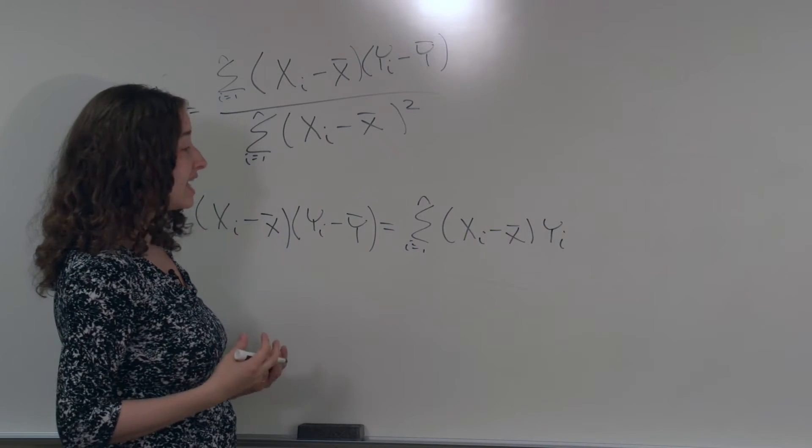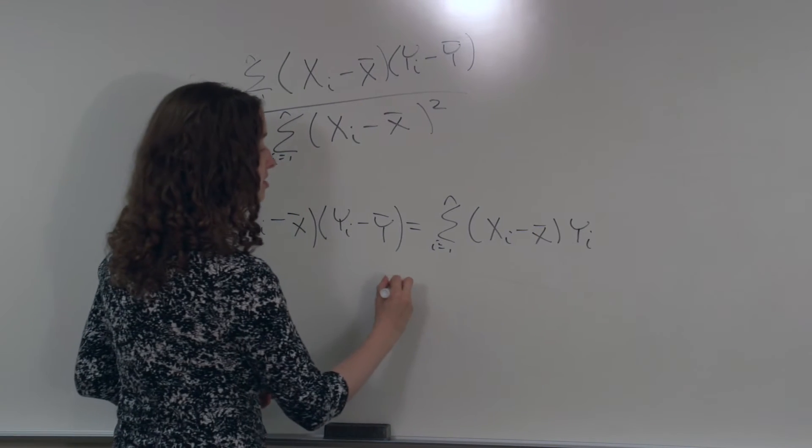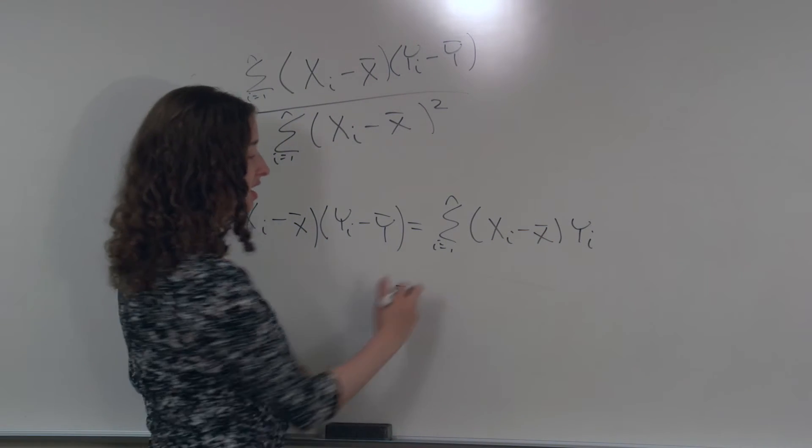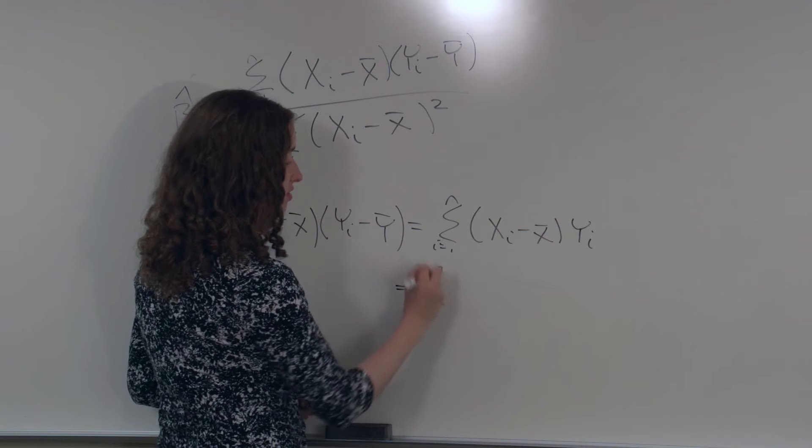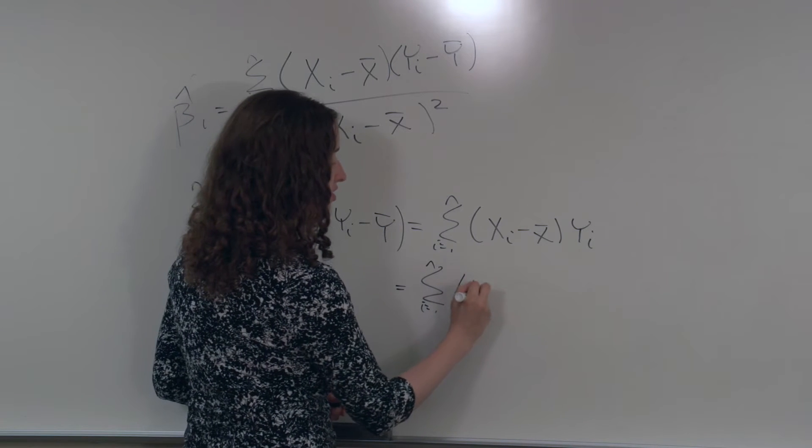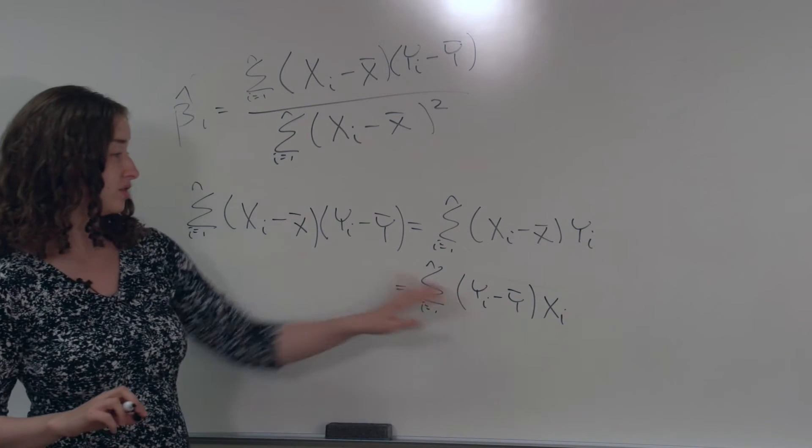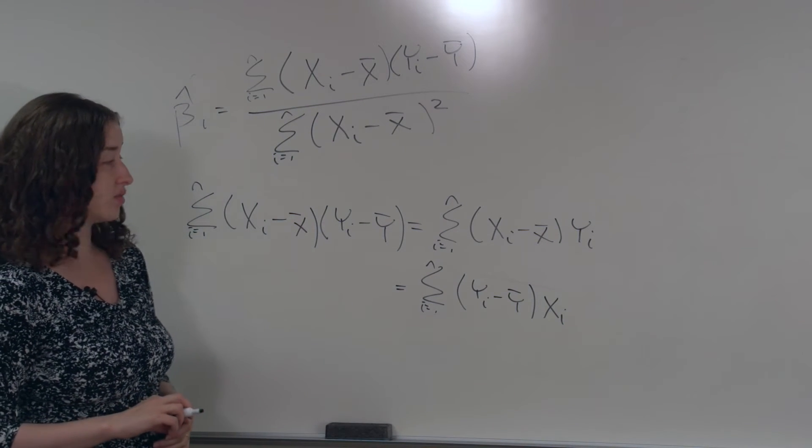Note that if I had taken exactly the same set of steps, but reversed the roles of x and y, I could just as easily have shown that this is true. This is also true, because I could have x or y in either role.